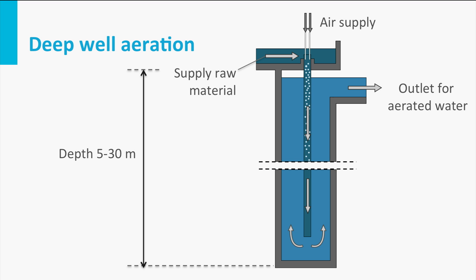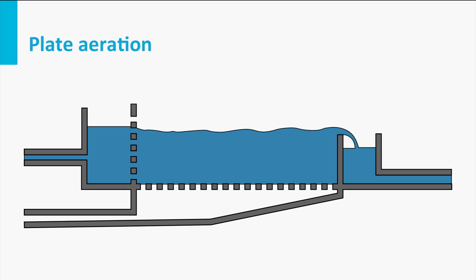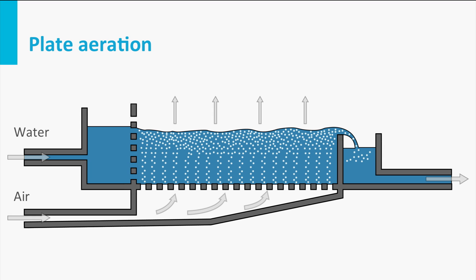For deep well aeration, air is brought into a vertical tube where the mixture flows down to a depth of 5 to 30 meters. The water then flows out of the tube into a larger shaft. Because of the high hydrostatic pressure, a very high transfer of oxygen is achieved within an exceptionally small space. Oxygen can be added to the water, but gas removal rarely occurs. With plate aeration, a large amount of air is blown through a thin layer of water through many small holes in the bottom. The large amount of air causes strong turbulence and good gas transfer despite the short residence time, achieving very good methane removal and considerable carbon dioxide removal. However, the system is very sensitive to fouling, as the small holes can clog due to iron and calcium deposits.